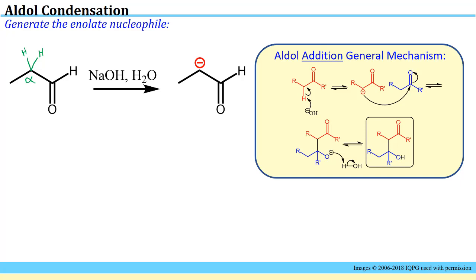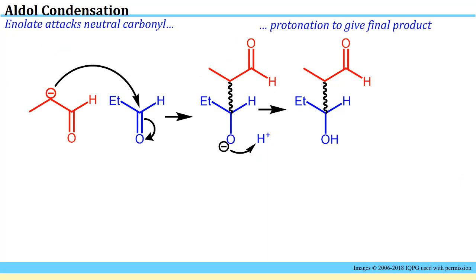If we take a look at our carbonyl and remember that you have to deprotonate at the alpha position, a hydroxide ion will pull off an alpha proton to form this enolate. Once formed, this nucleophile will undergo nucleophilic addition to the carbonyl to form this intermediary species, which then gets protonated to give us our final product. Notice that in this particular case, we did generate a chiral center, and we would expect a racemic mixture.